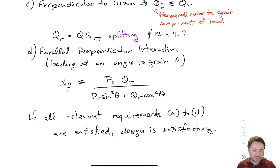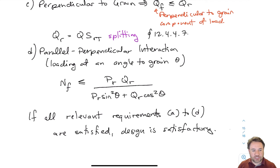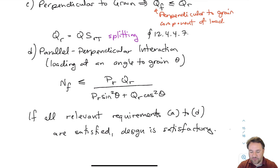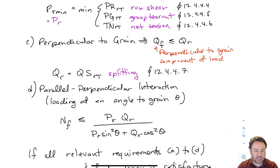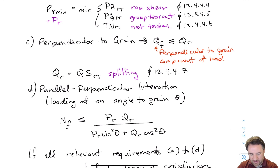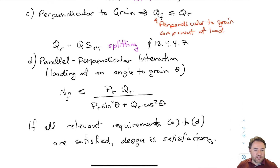That brings us to the end of bolted connection design. We've looked at spacing requirements and geometry; the yielding failure mode, which doesn't depend on angle and applies to the entire connection; the parallel-to-grain failure modes — row shear, group tearout, and net tension; and the perpendicular-to-grain failure mode — splitting. Then we looked at the interaction equation for loads causing both parallel and perpendicular-to-grain failure. Next, we'll look at examples of bolted connection checks and designs to get our feet wet on these equations.